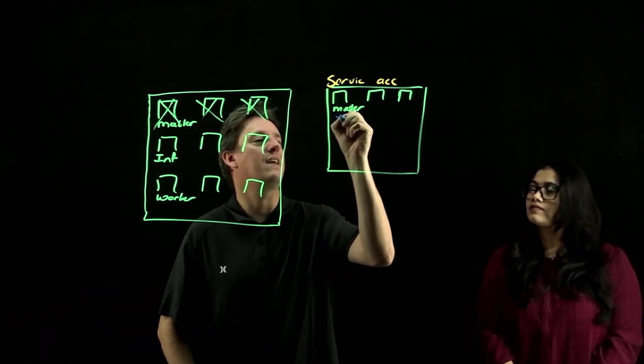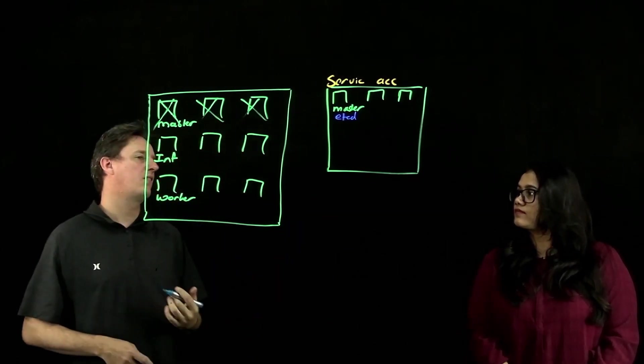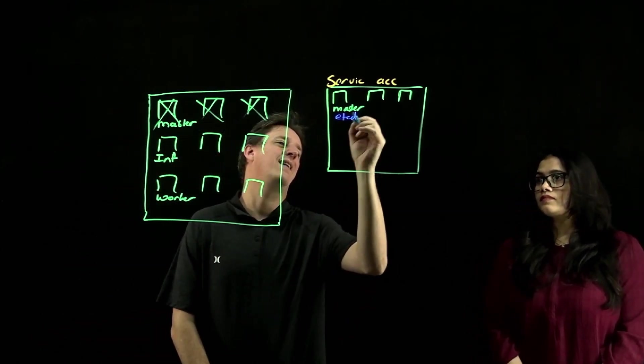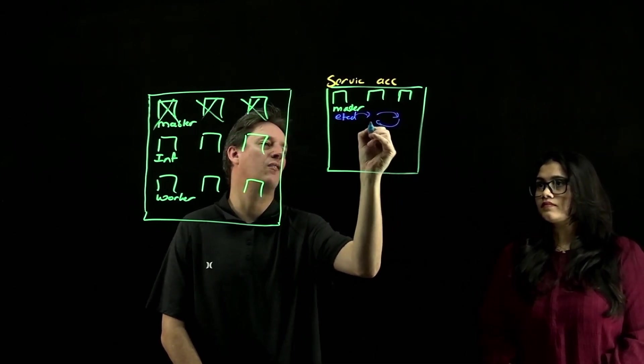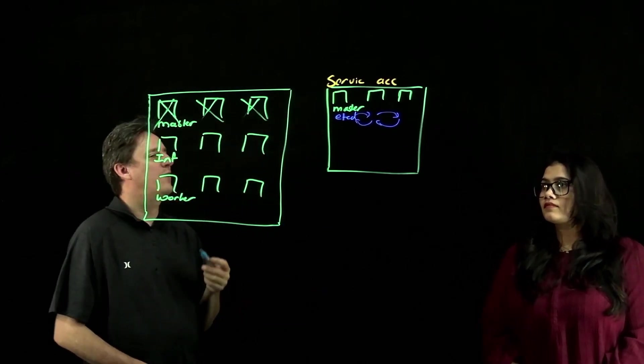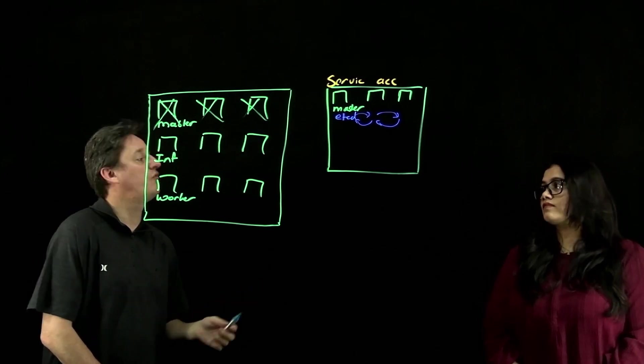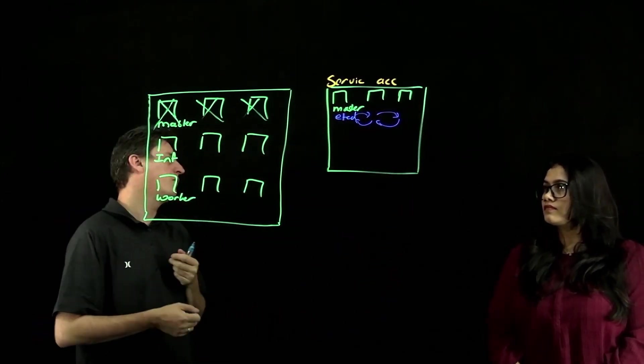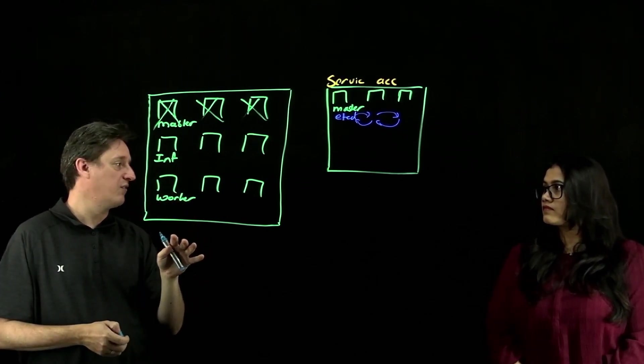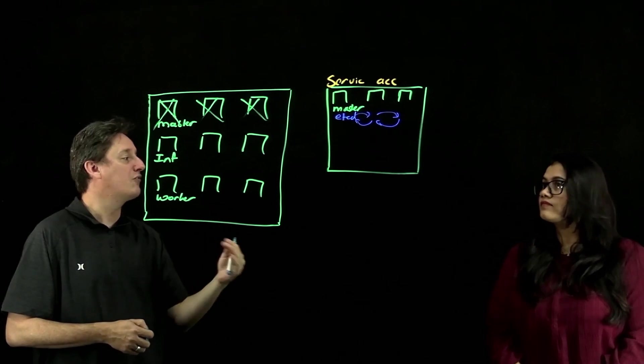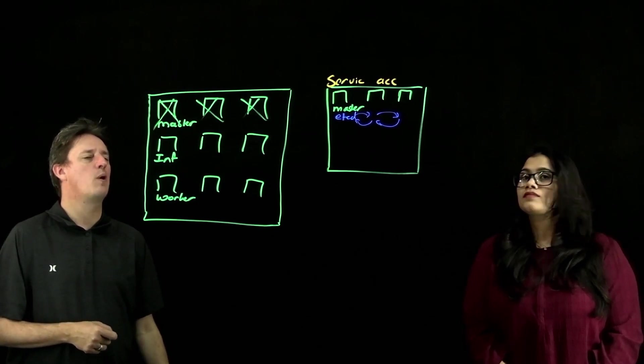The etcd layer of the database that backs Kubernetes sits on these master nodes and in order to maintain its resilience model etcd replicates between all of these nodes. And what this results in is inter availability zone data transfer costs. So by moving the etcd layer into the service account, we again remove all of the costs related to that inter availability zone data transfer out of the customer account. Again, giving a little bit of cost break point there.